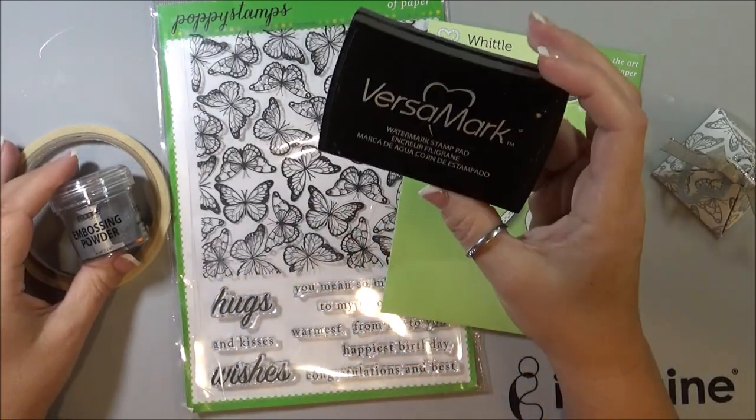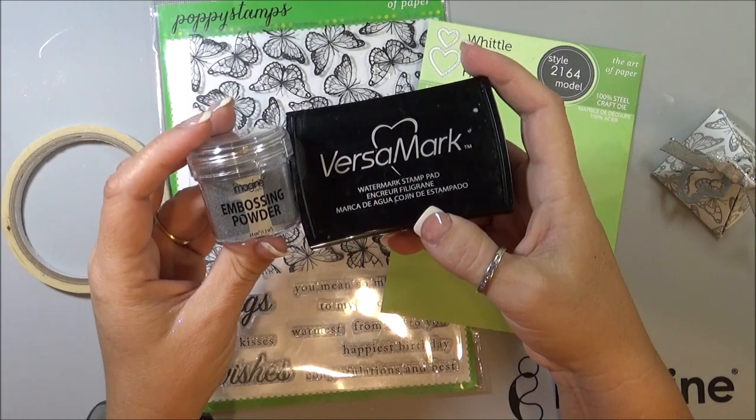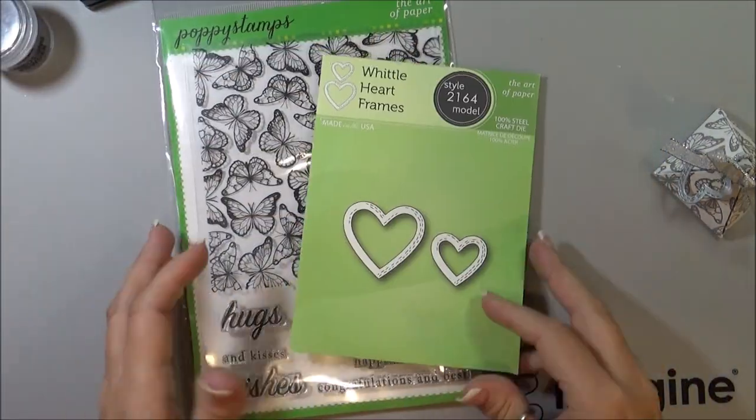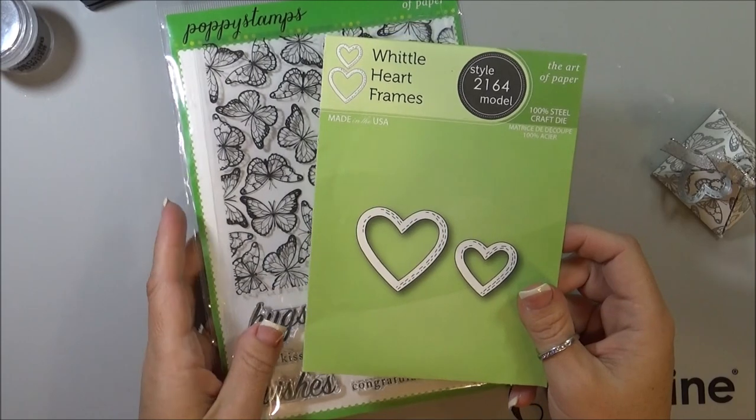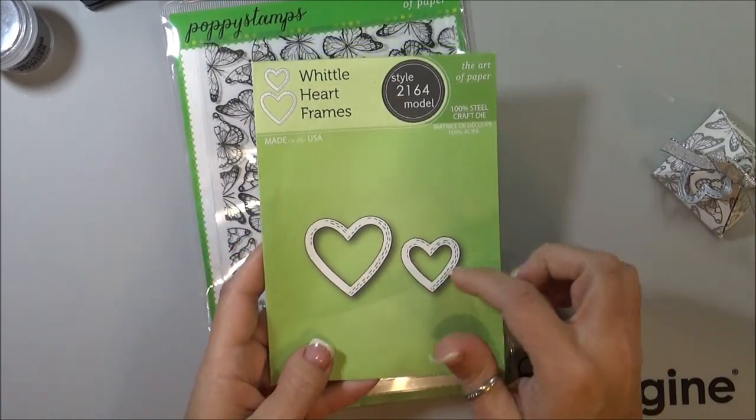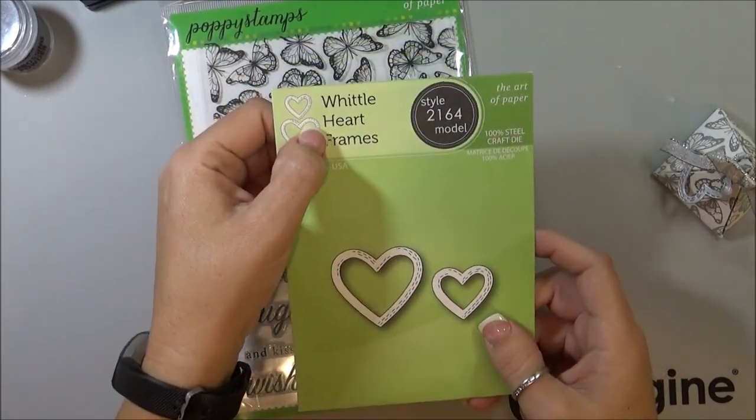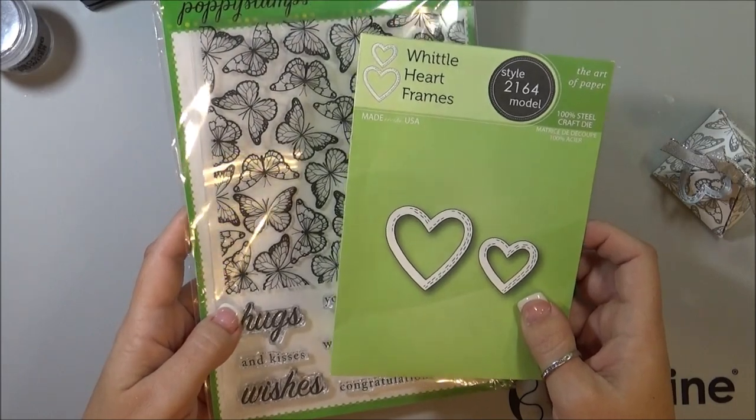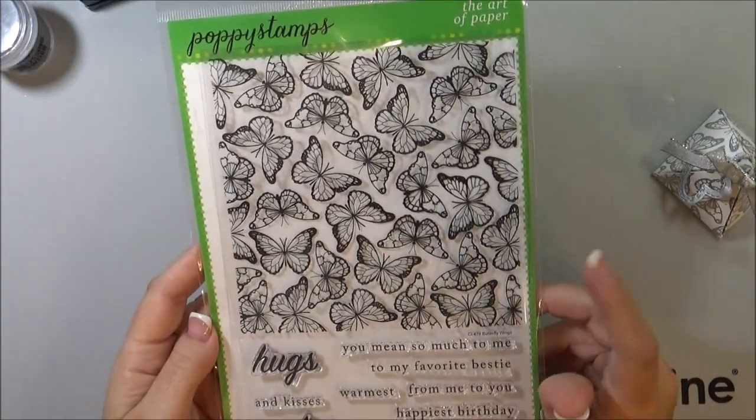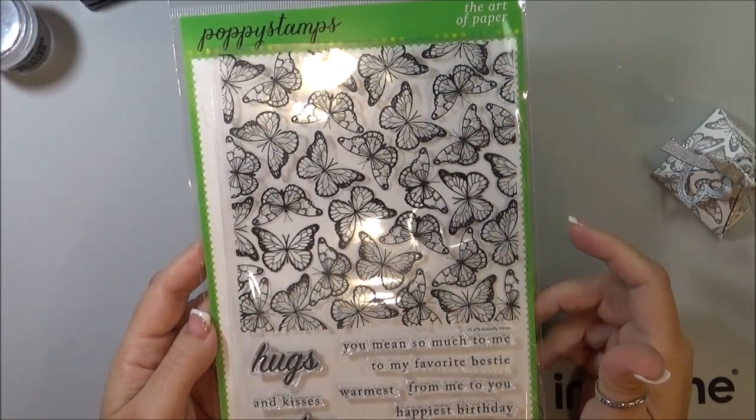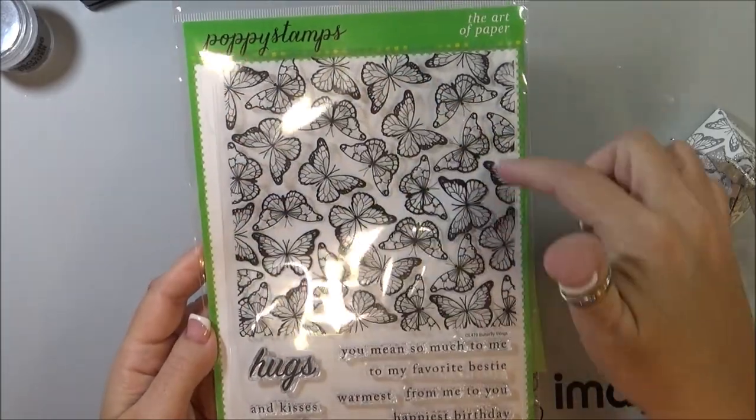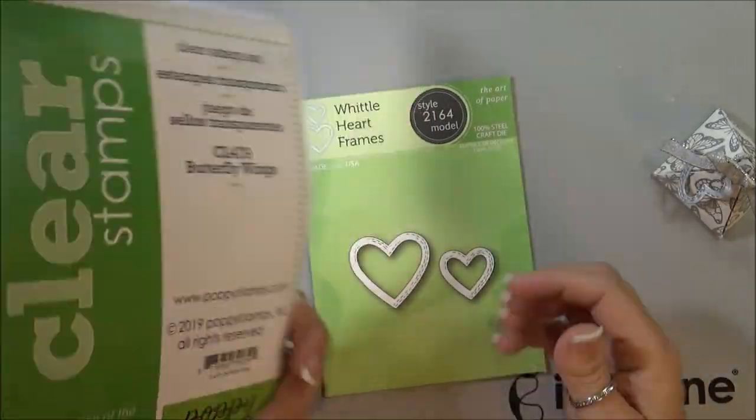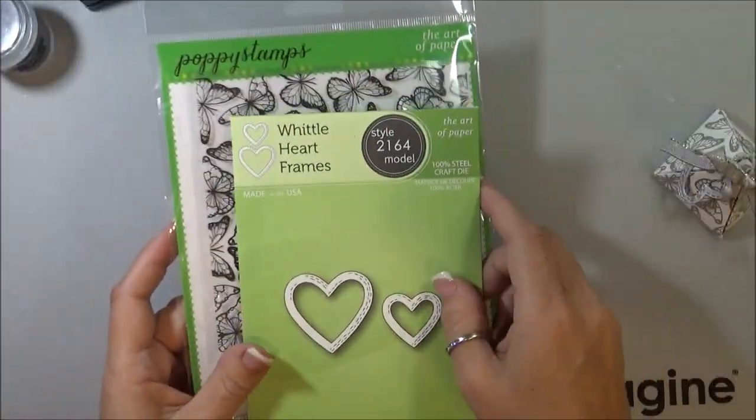So I'm going to be using some Versamark, some embossing powder in silver, and I'm also going to be using this die from Poppy Stamps, this little heart. It's the Whittle Heart Frame. And then I'm also going to be using this Poppy Stamps background stamp, this big butterfly one. This is called Butterfly Wings.